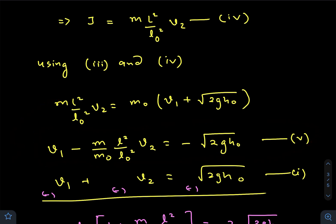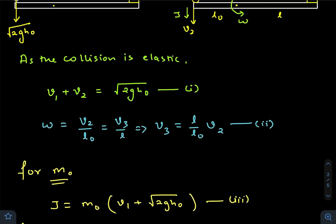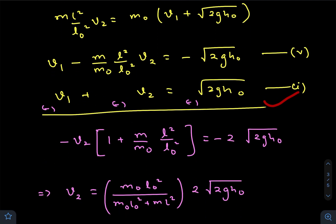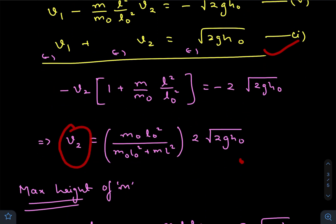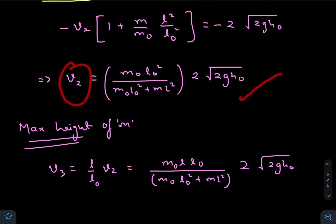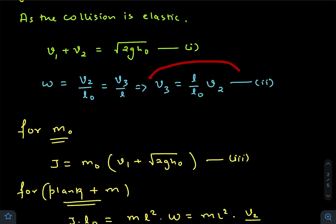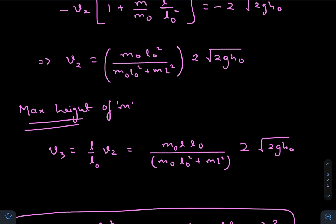we get equation one. Remember, velocity of separation and approach will be the same. We put this equation here, and solving for v₂, we get this. Now, to find the maximum height reached by the block, we need v₃. We already discussed v₃ by comparing the value of ω.